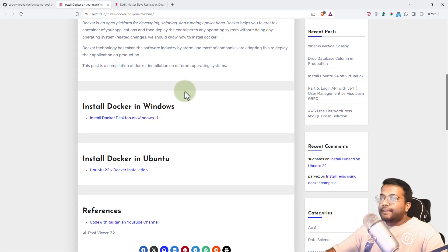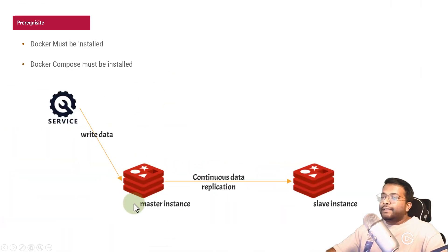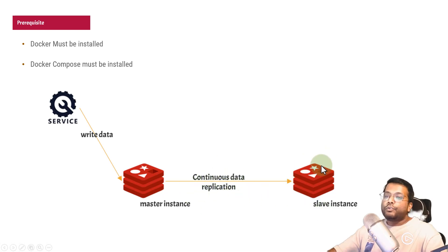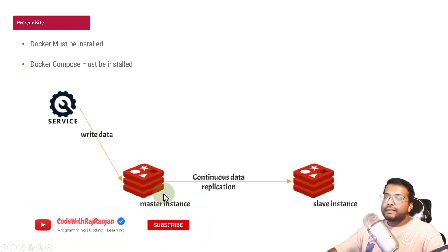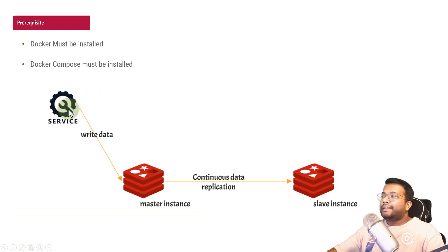If your system satisfies the condition, like you have Windows 11 and want to install Docker, you can follow that blog post. What we are going to do is have a master Redis instance where data is being inserted, then establish continuous data replication to the slave instance. Two Redis containers will be deployed — one called master and one called slave — and there will be a replication of data. Whatever I insert into the master instance will automatically get replicated to the slave.